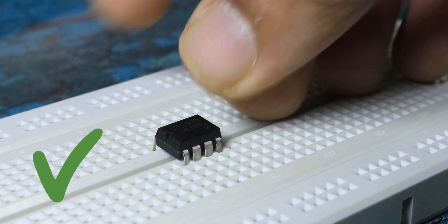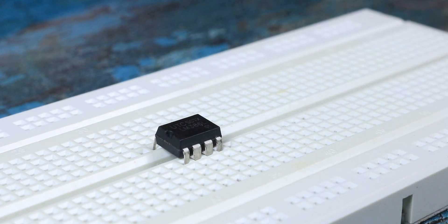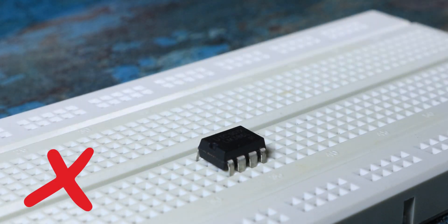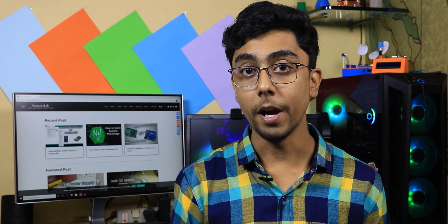Finally, this is how you connect your IC to the breadboard. You should always connect the IC separated by the middle line, which means like this and not like this. And that's all you need to know about the breadboard.